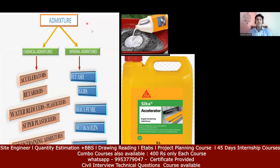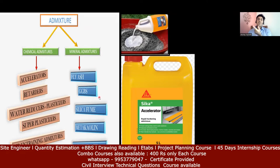Admixtures are classified in many ways. We have two types of admixtures. First, we have chemical admixtures, and second, we have mineral admixtures. In chemical admixtures we have accelerators, retarders, water reducers, superplasticizers, and air-entraining admixtures. When it comes to mineral admixtures, we have fly ash, GGBS, silica fume, metakaolin, and rice husk ash.